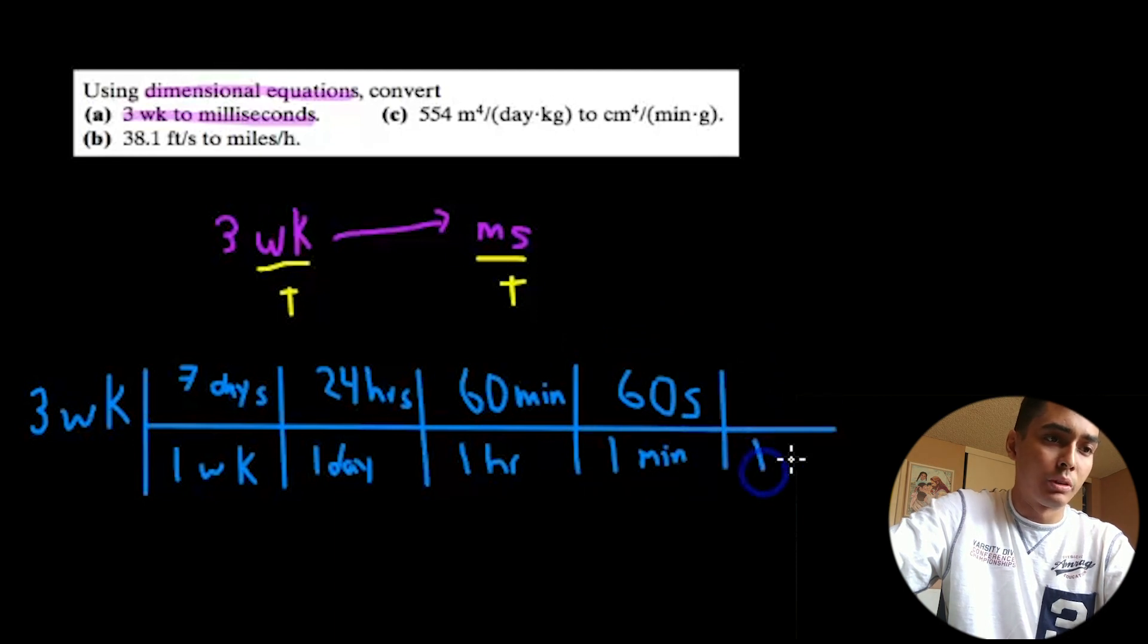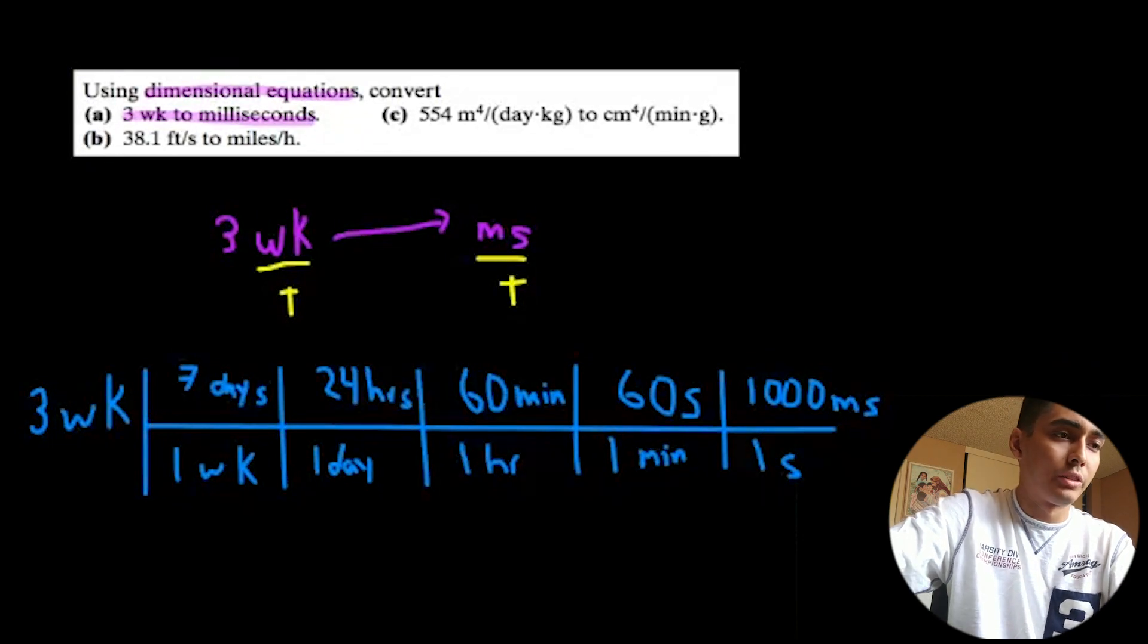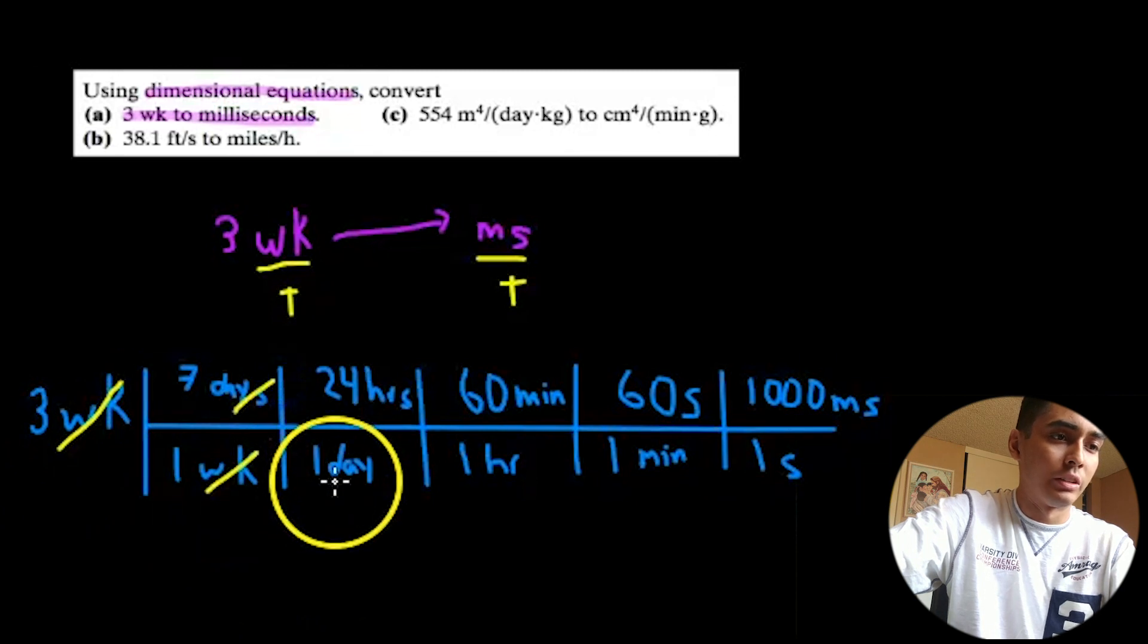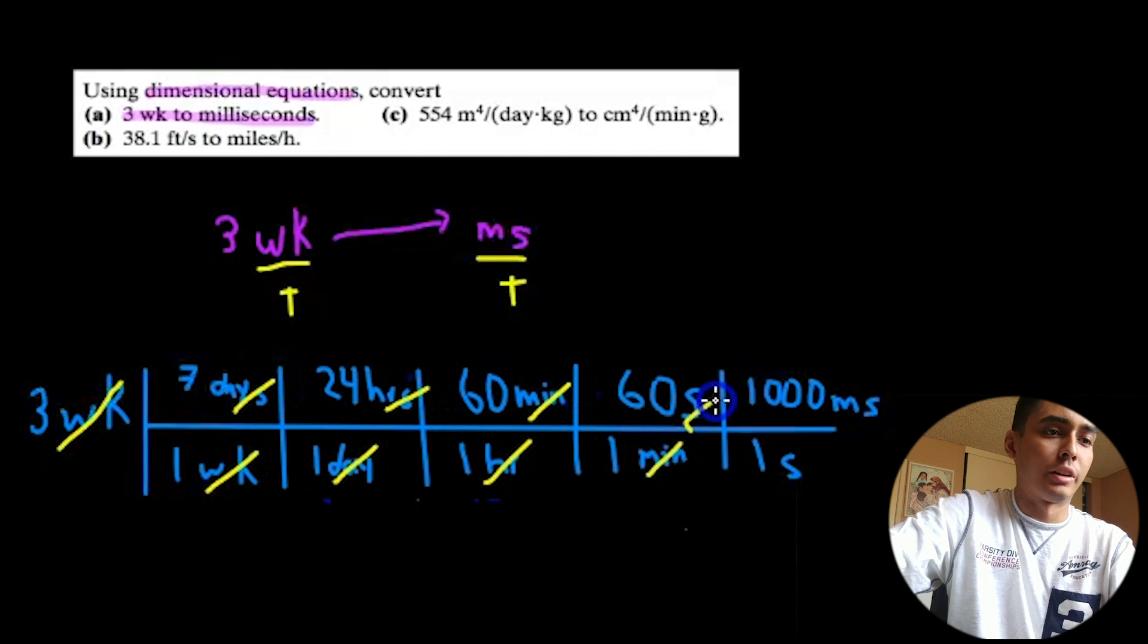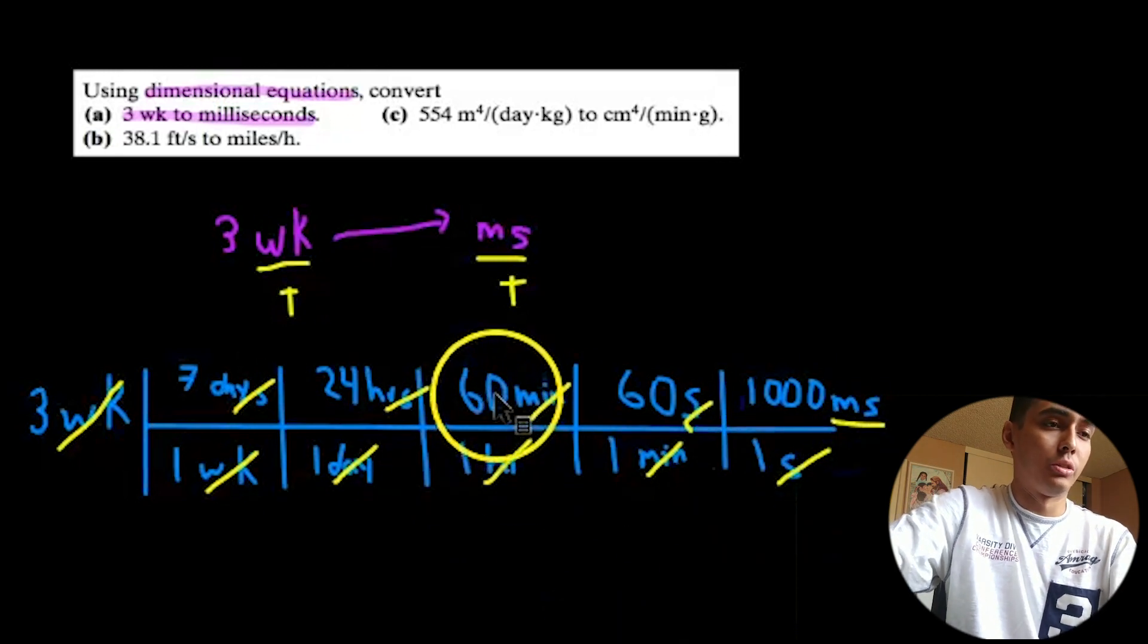Continue the line. And finally, in one second, there's a thousand milliseconds. So before we continue with this calculation, let's just make sure that we can cancel out weeks with weeks, days and days, hours and hours, minutes with minutes, and finally seconds to leave us with milliseconds. So we can do this calculation.